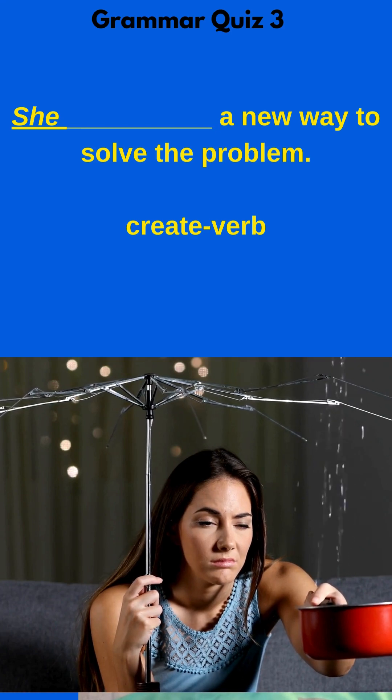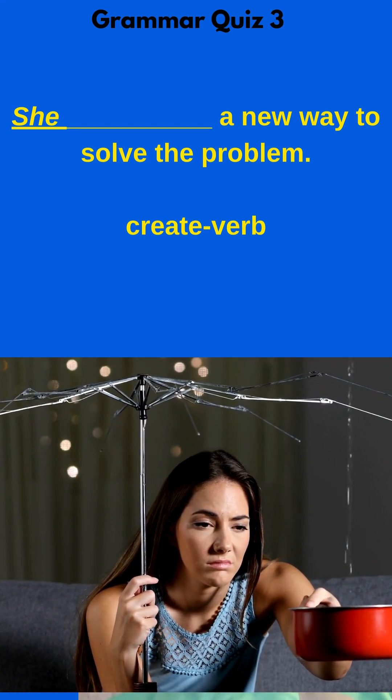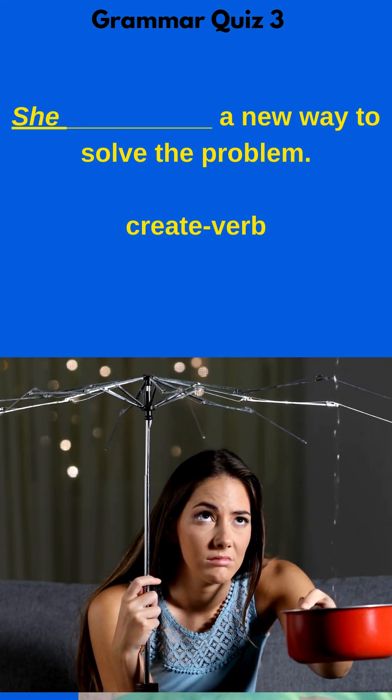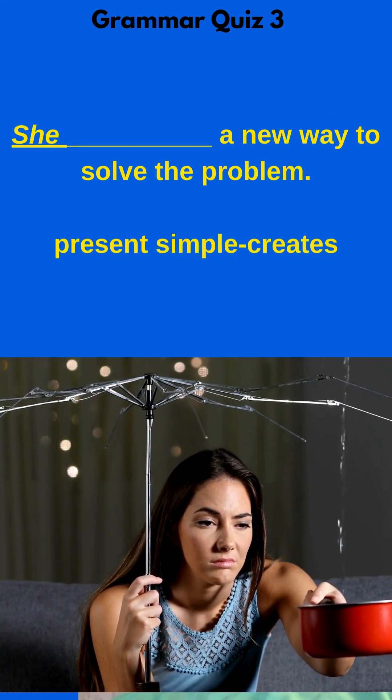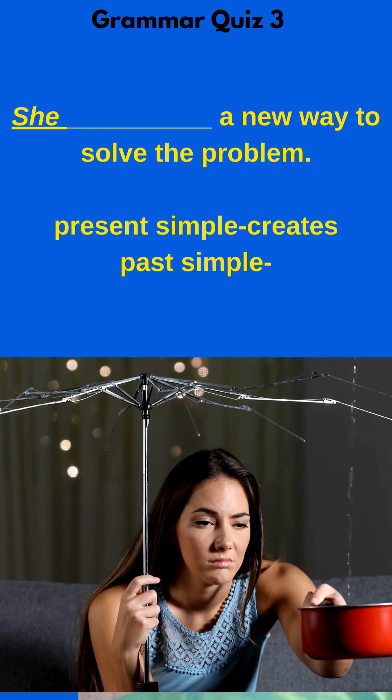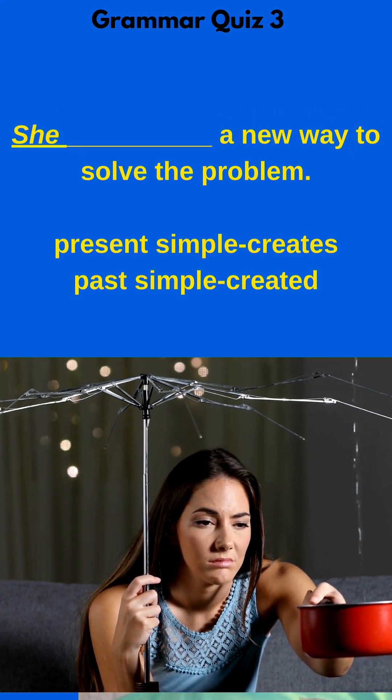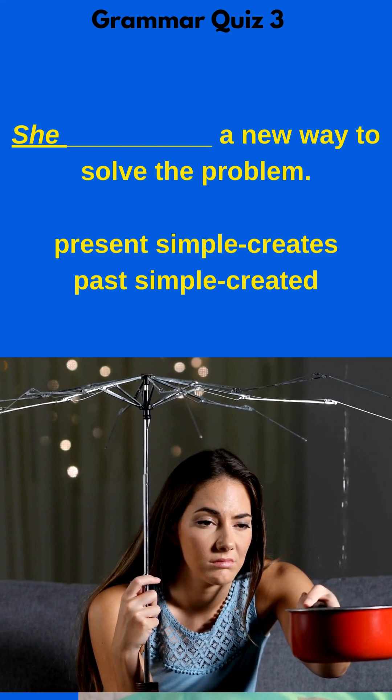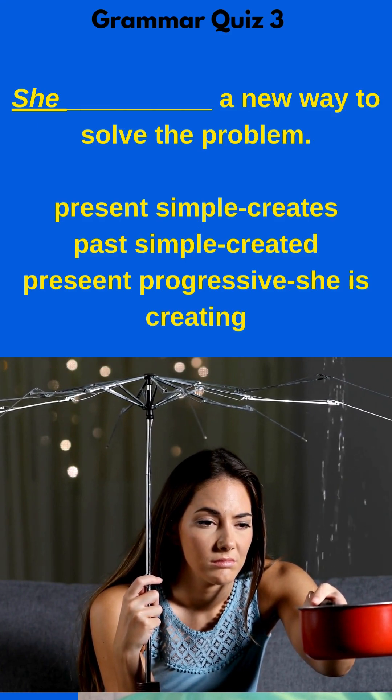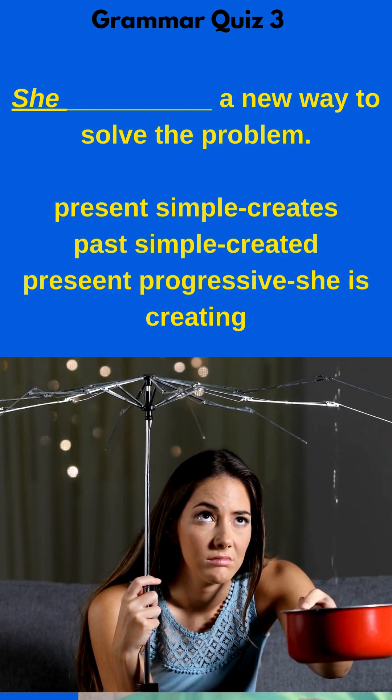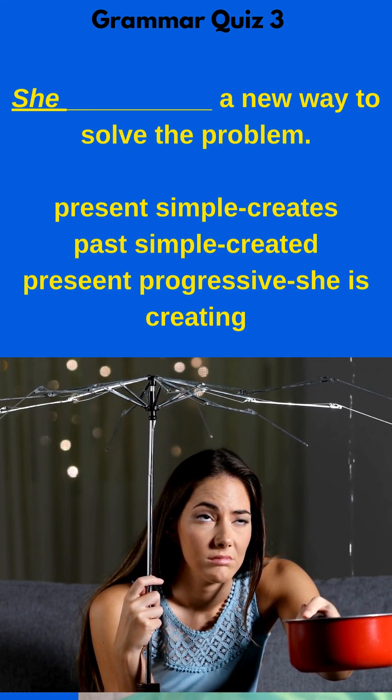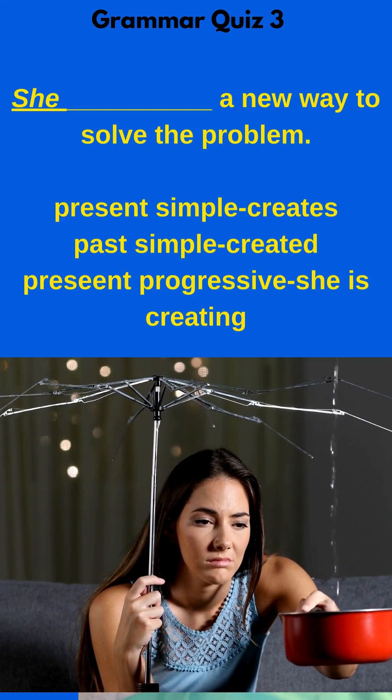But wait, there's more. I need to think about what verb tense. So if it's present simple, I would say 'she creates' with an S. If it's past simple, I would say 'she created.' I could even talk about present progressive and say 'she is creating' with an I-N-G, a new way to solve the problem. So in that sentence, I need a verb to complete the sentence. That's the word form.